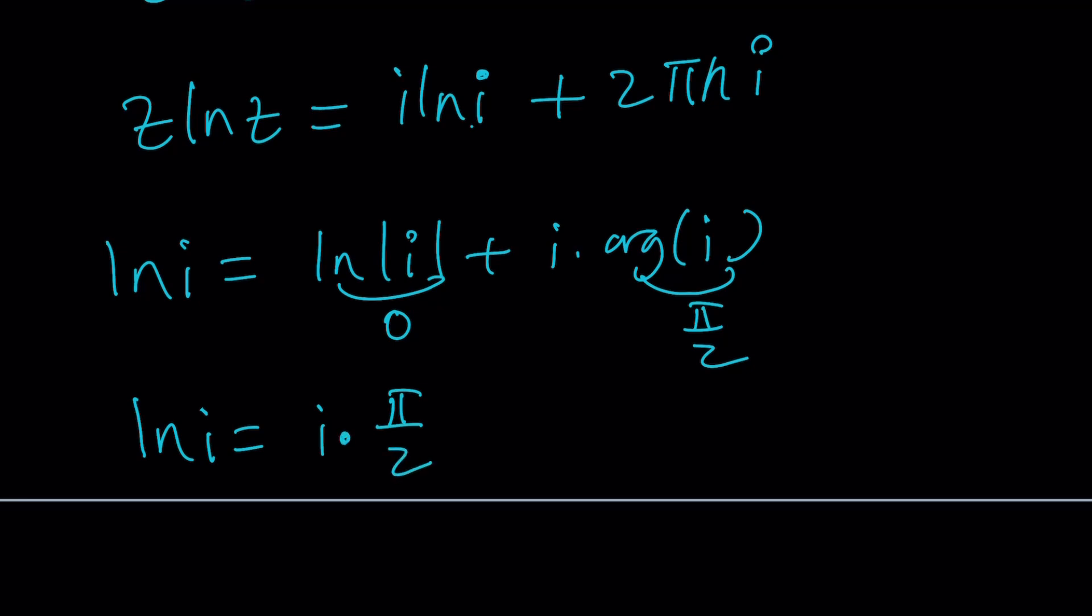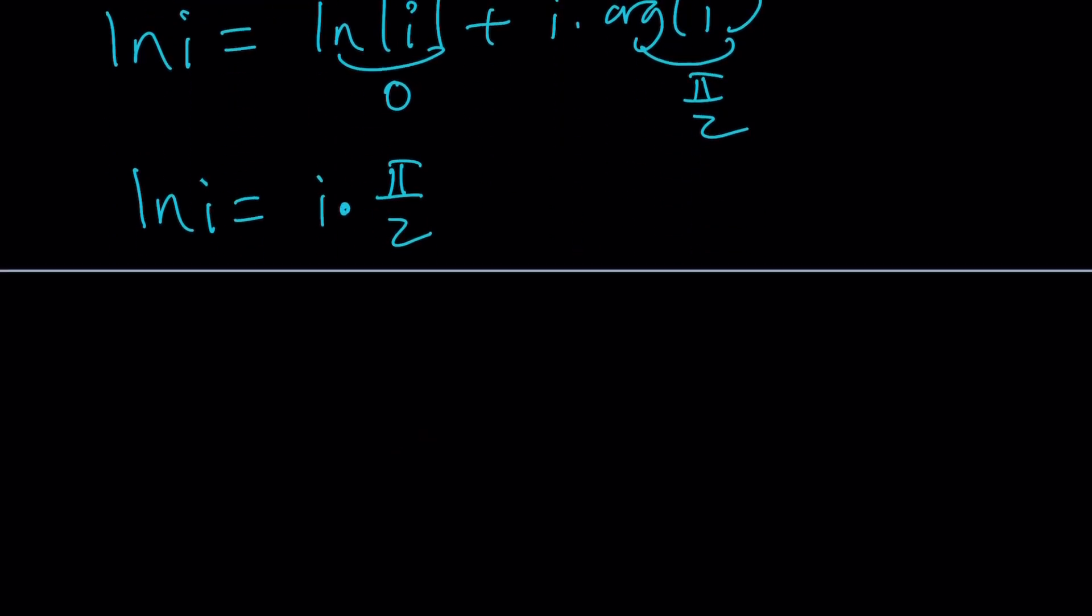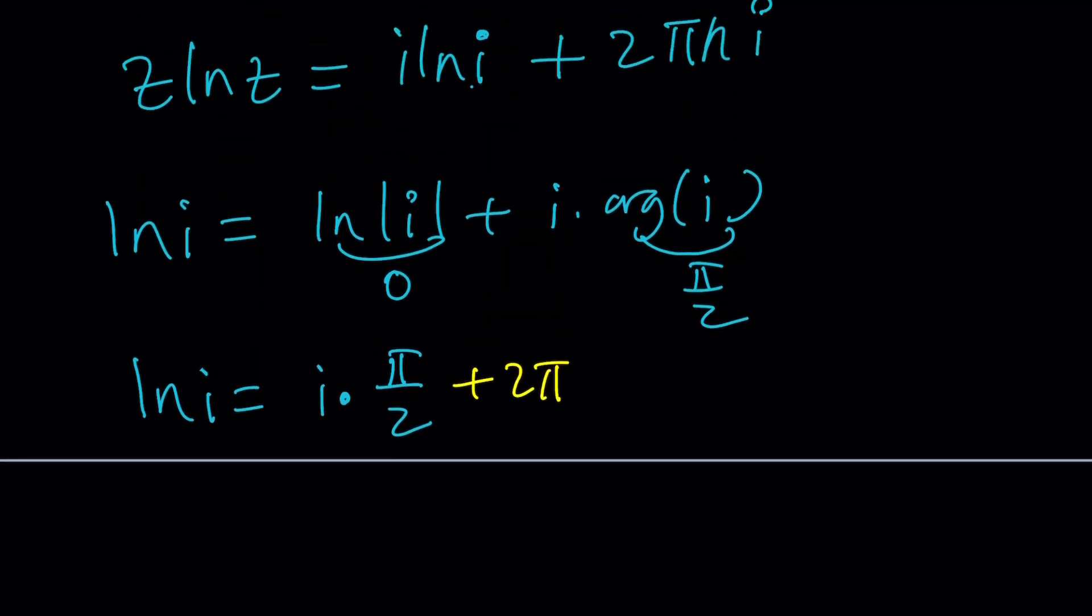But again, because of the multi-valued nature of the argument, pi over 2 can be written as pi over 2 plus 2 pi n. Or I guess you could use 2 pi k, because we already used n. So you can kind of make the argument more general. So that's ln i. ln i is a multiple of i. It could be positive or negative, by the way. Be careful.